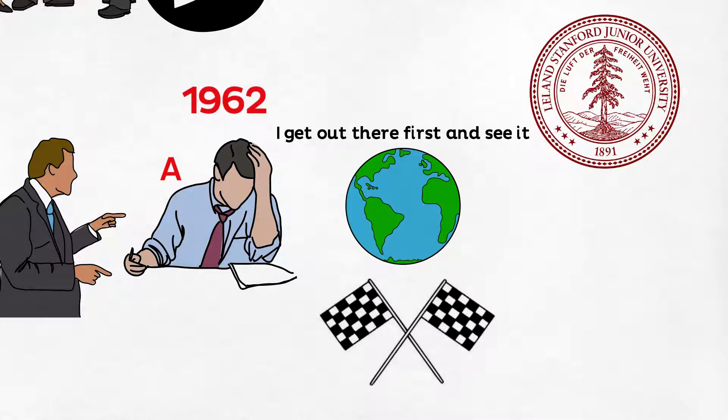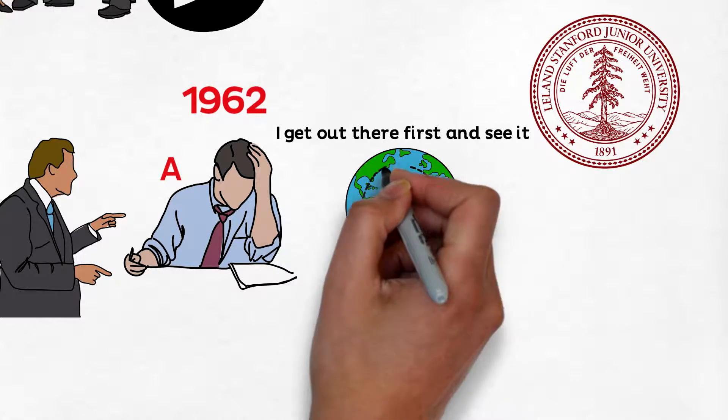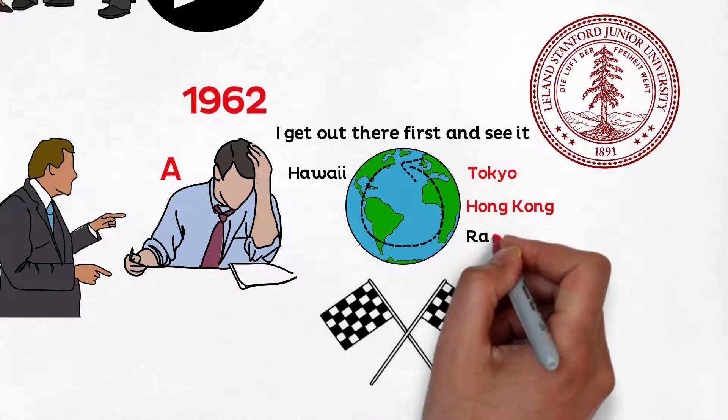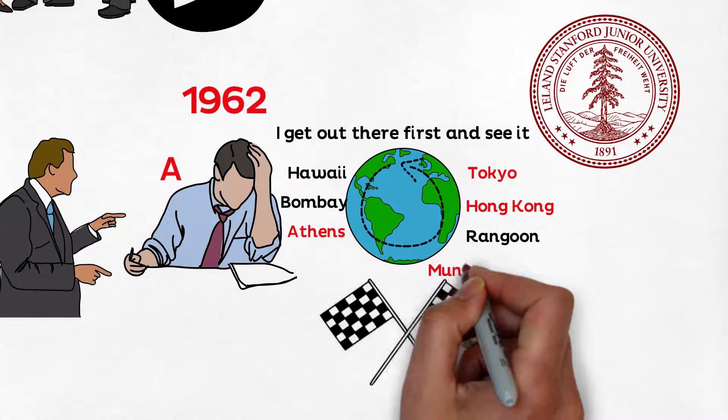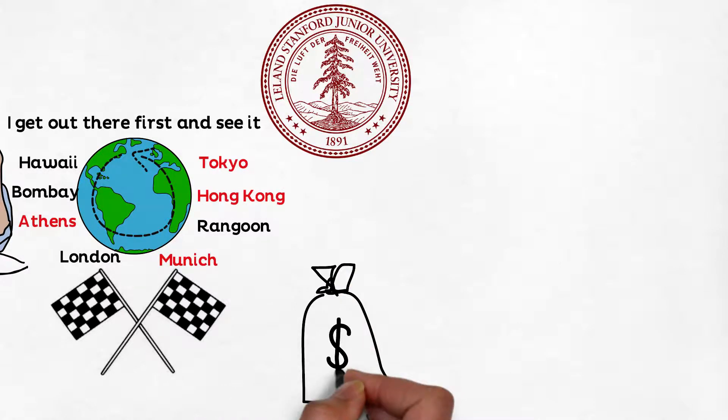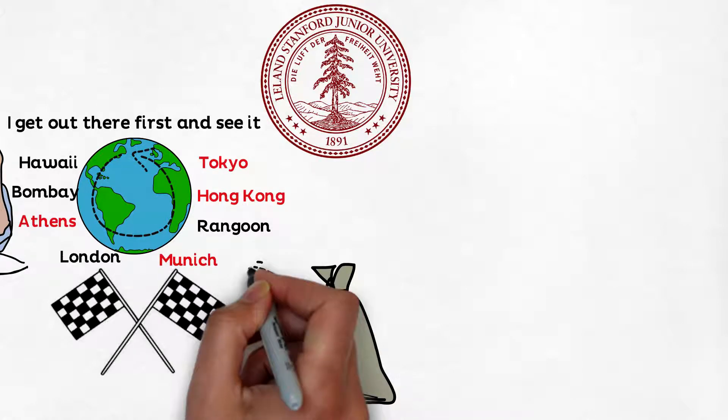With this notion and permission from his family, he set on a backpacking trip to see a long list of places such as Hawaii, Tokyo, Hong Kong, Rangoon, Bombay, Athens, Munich, and London. He took a small loan from his father to pay for his trip, carefully planning the destination with his friend Carter.